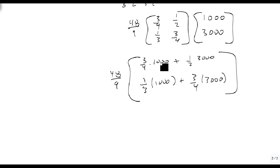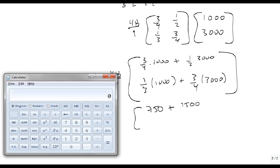This gives us 250 times 3 is 750, plus 1,500. Let me make sure that's right. 3 times 4 divided by 1,000, 3 times 4 divided times, no, I got that all wrong. 3 divided by 4, 3 divided by 4 times 1,000 is 750, plus 3,000 divided by 2 is 2,250.